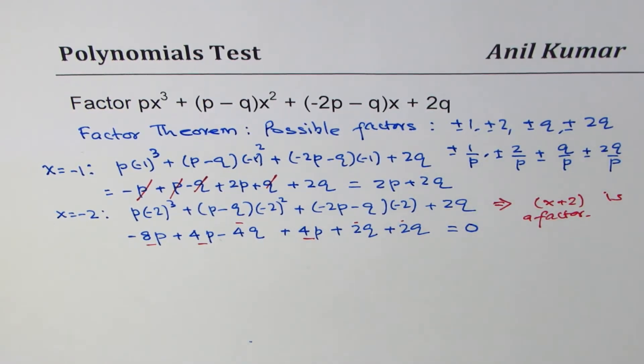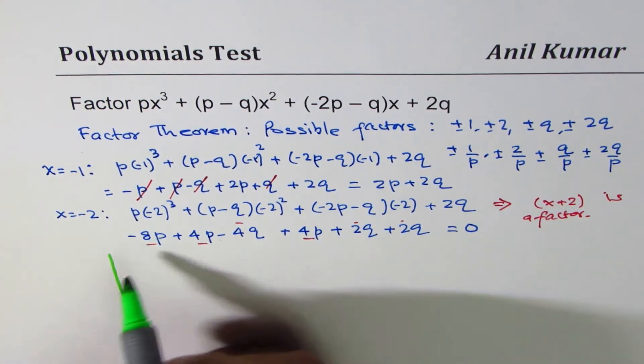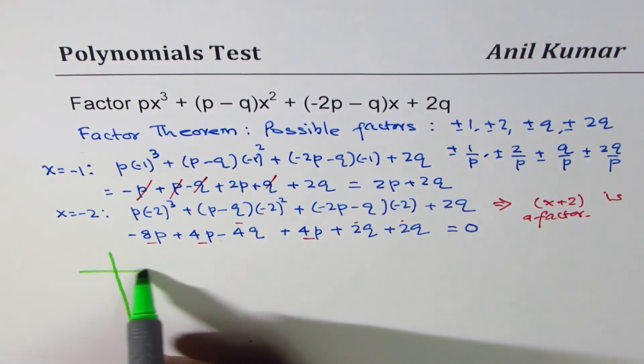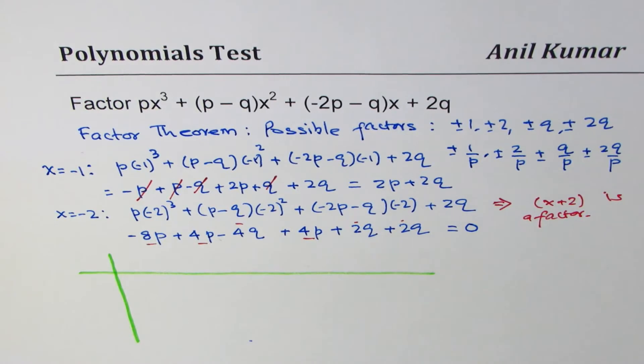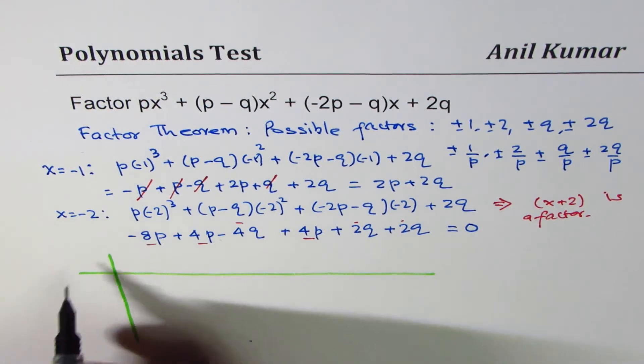Now, I'll show you synthetic division. We have very less space here. And we'll divide this by x + 2. So we'll do synthetic division here. OK. So the terms which we have, we're dividing by x + 2. -2 makes it 0.